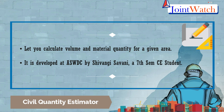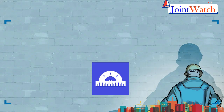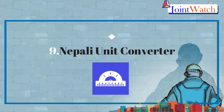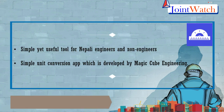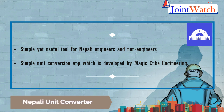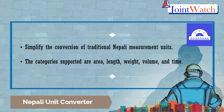The ninth one is Nepali Unit Converter. Our list of top 10 apps for civil engineers includes this simple and useful tool for Nepali engineers and non-engineers, both living in the country and abroad. Nepali Unit Converter is a simple unit conversion app developed by Magic Cube Engineering. It simplifies the conversion of traditional Nepali measurement units into metric as well as imperial unit systems, and vice versa.